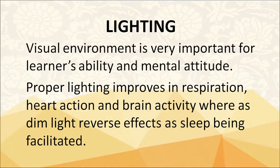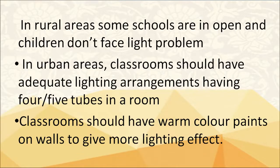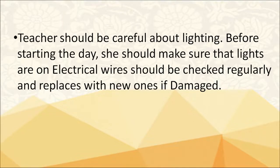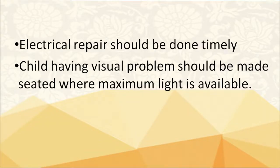Let us discuss the lighting system in schools. The visual environment is very important for a learner's ability and mental attitude. Proper lighting improves respiration, heart action and brain activity, whereas dim light has reverse effects, facilitating sleep. In rural areas, some schools are in the open and children do not face lighting problems. In urban areas, classrooms should have adequate lighting with 4 to 5 tube lights in a room. Classroom walls should have warm color paint to give more lighting effect. Teachers should make sure lights and electrical wires are checked regularly and replaced if damaged, and electrical repairs should be done timely. Children with visual problems should be seated where maximum light is available.